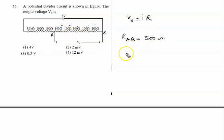Now we calculate the current. Current is given by net voltage upon net resistance. The net voltage is 4 volts.